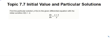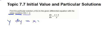Find the particular solution y equals f of x to the given differential equation with the initial condition f of 0 equals negative 2. The first thing we have to do is separate variables. In this case, I can just cross multiply, making it fairly easy, and I have y dy equals x plus 1 dx when I separate my variables.